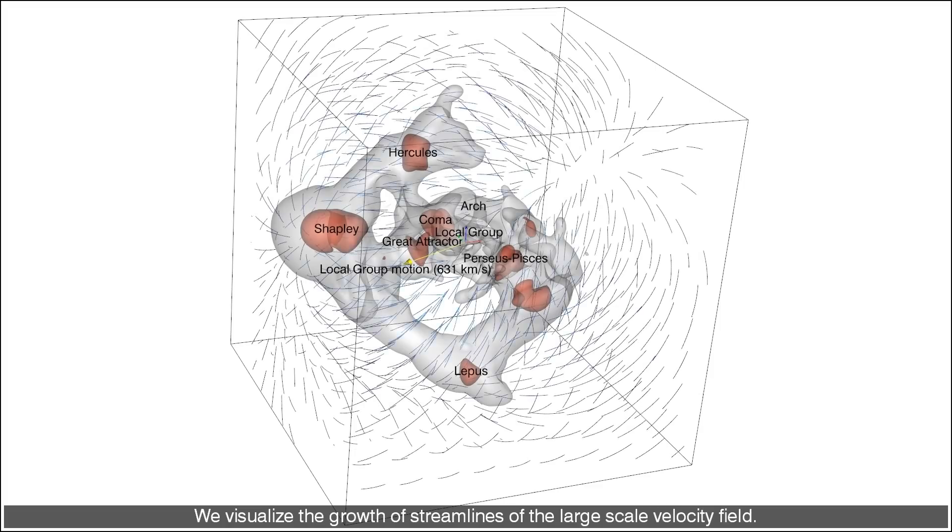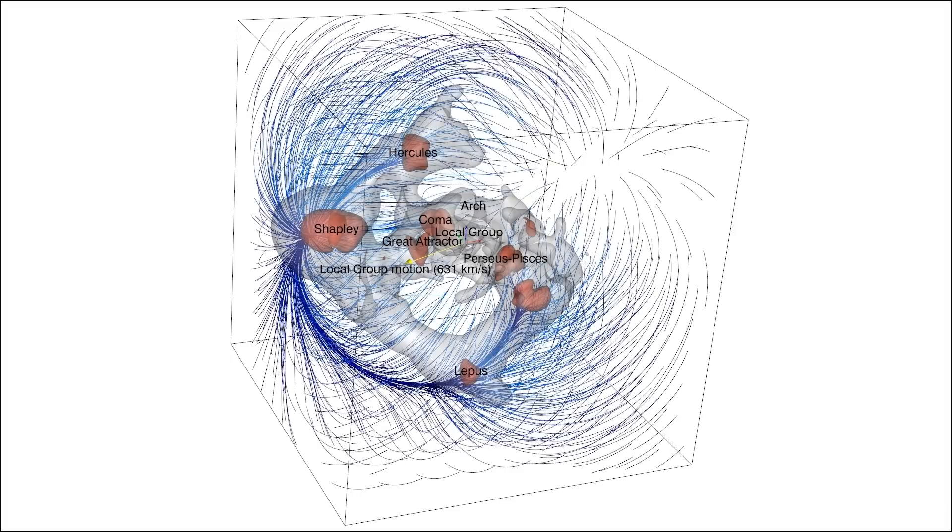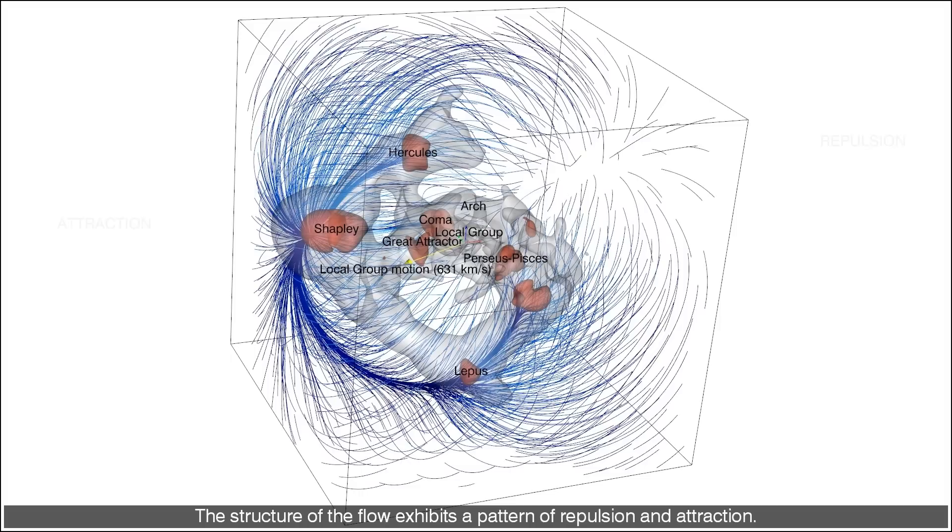We visualize the growth of streamlines of the large scale velocity field. The structure of the flow exhibits a pattern of repulsion and attraction. Mass elements travel a typical distance of roughly 1000 km per second along flow lines.